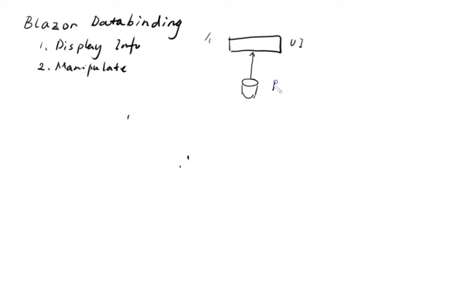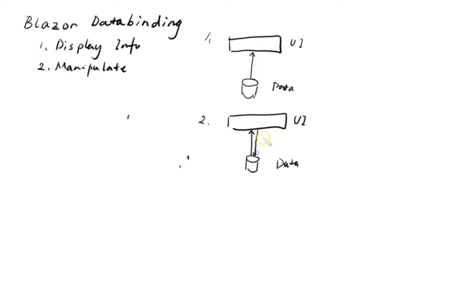So this is UI, this is data. And the second one is data manipulation — we have UI and we have data, and data flows into the UI. So when you do your data manipulation on the UI, you always want to save the data back to the data source. From this we know that there are two kinds of data flow: one-way data flow and two-way data flow.